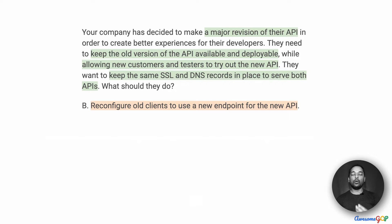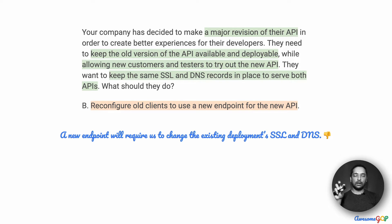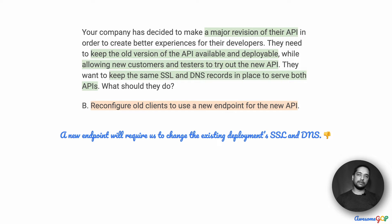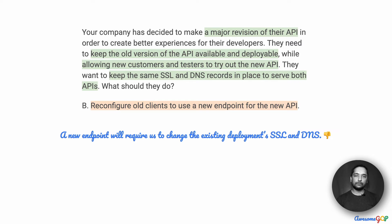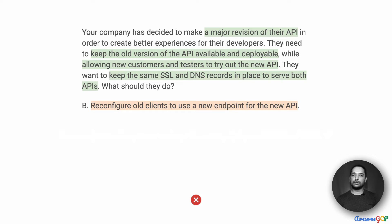Option B suggests reconfiguring old clients to use a new endpoint for the new API. This recommends that the new API takes over the SSL and DNS records of what existed before, whereas the old one is set up at a new endpoint. All the existing customers are going to connect to the new one, which they shouldn't, and they're going to lose access to the older one or have to reconfigure things to find it. A new endpoint will again require changing SSL and DNS for the old deployment, which is also not allowed. So option B is not acceptable.